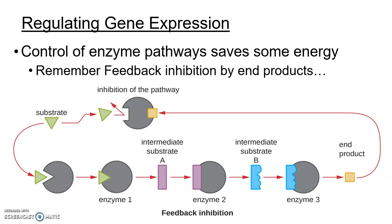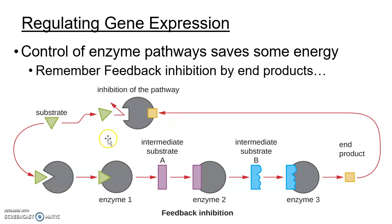The ones that develop favorable mutations for saving energy are going to dominate in the population. One example is that cells can save energy by controlling enzymes. In feedback inhibition, or end product inhibition, the first enzyme in a pathway binds to a substrate and converts it through a series of enzyme-catalyzed reactions to an end product. That end product binds to the allosteric site of the first enzyme as an allosteric inhibitor, shutting down the whole pathway.